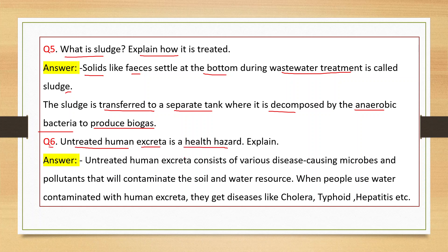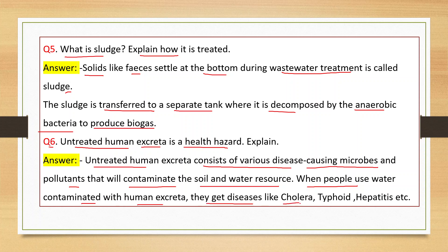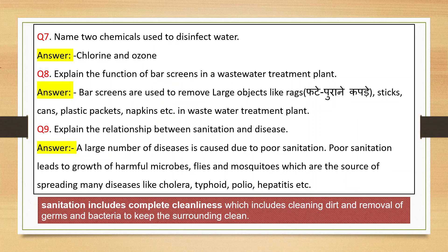Question number six: Untreated human excreta is a health hazard. Explain. Untreated human excreta consists of various disease-causing microbes and pollutants that contaminate soil and water resources. When people use water contaminated with human excreta, they get diseases like cholera, typhoid, hepatitis, etc. Question number seven: Name two chemicals used to disinfect water. The answer is chlorine and ozone.